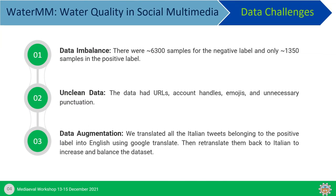The data challenges included 6,300 samples for the negative class and only 1,350 samples in the positive class. The data was also unclean, containing URLs, account handles, emojis, and unnecessary punctuations. We performed data augmentation by translating all Italian tweets belonging to the positive labels into English using Google Translate, then back-translating them to Italian to balance the dataset for both labels.